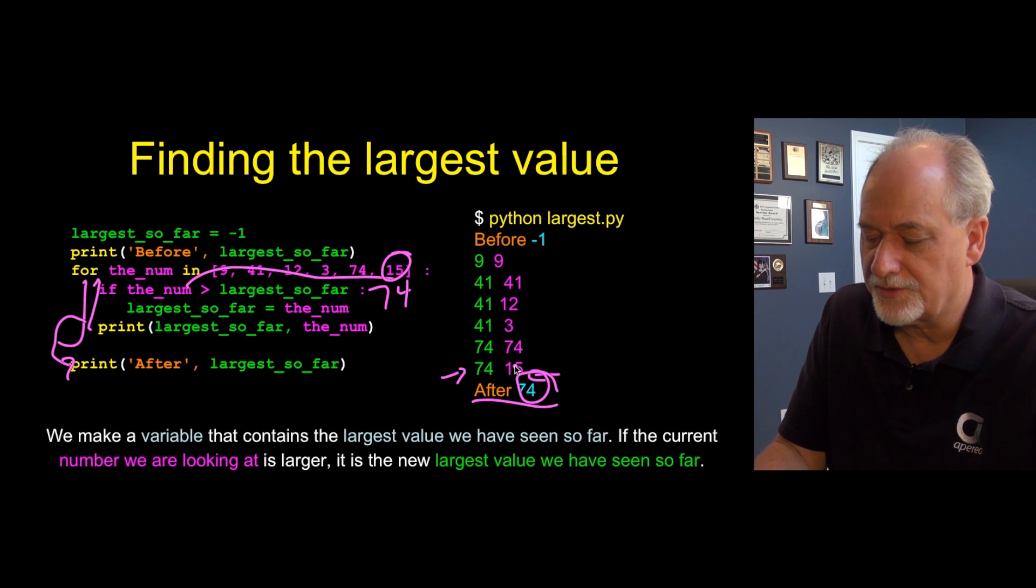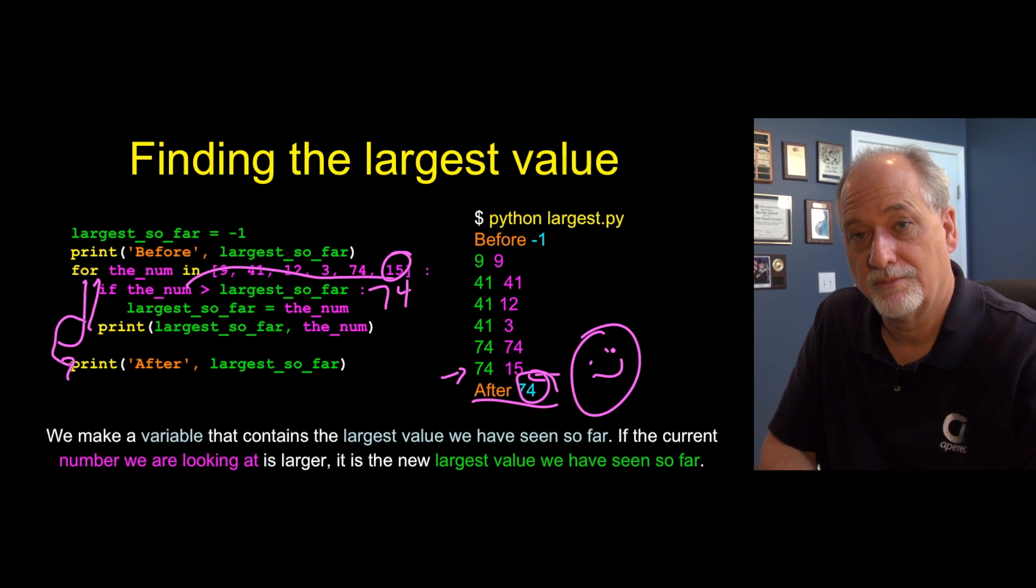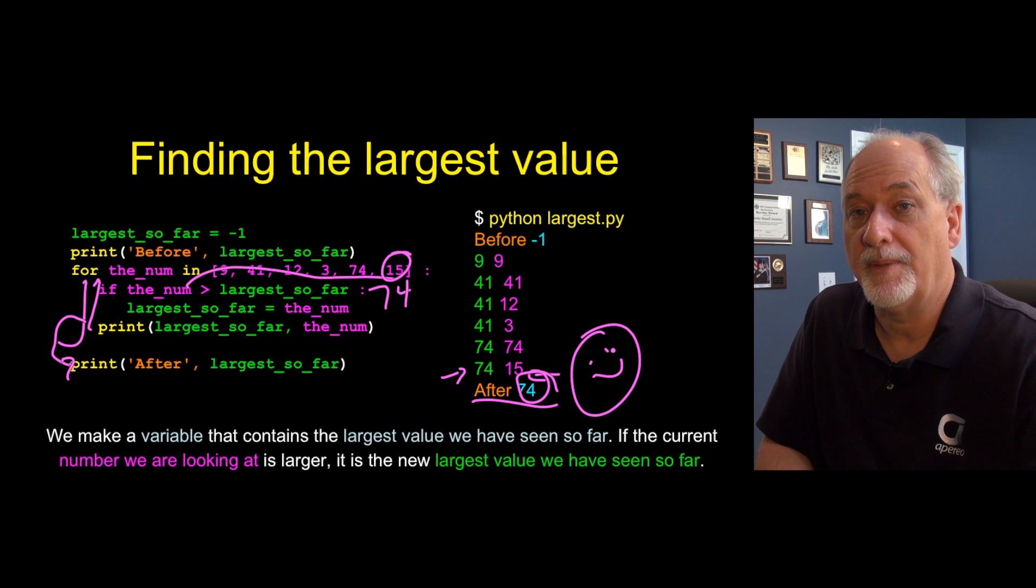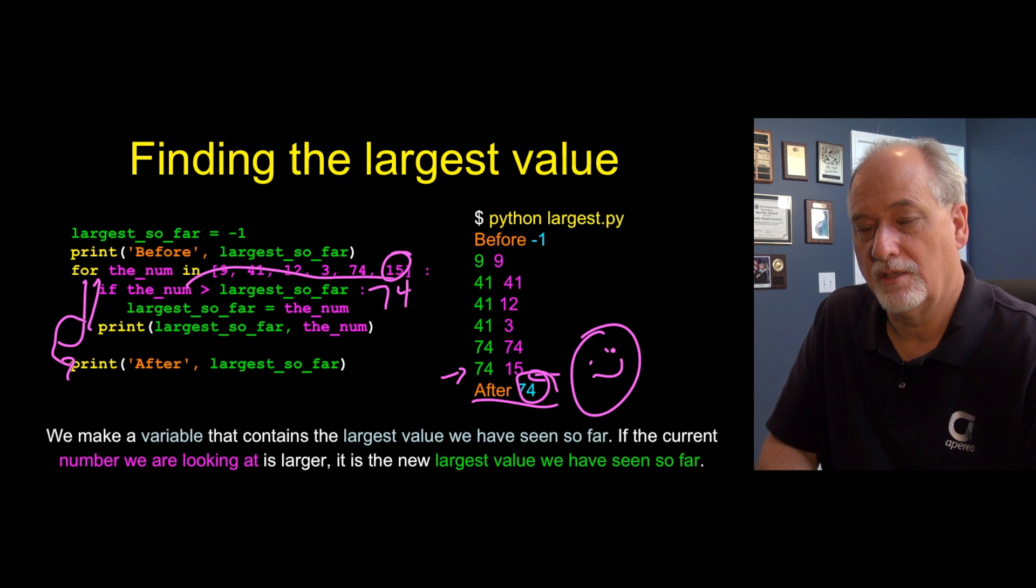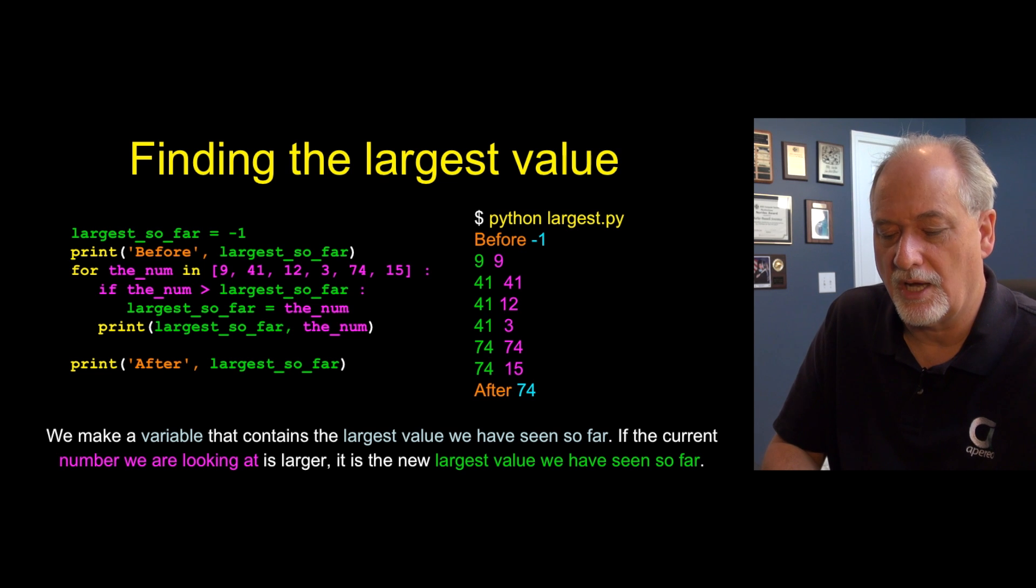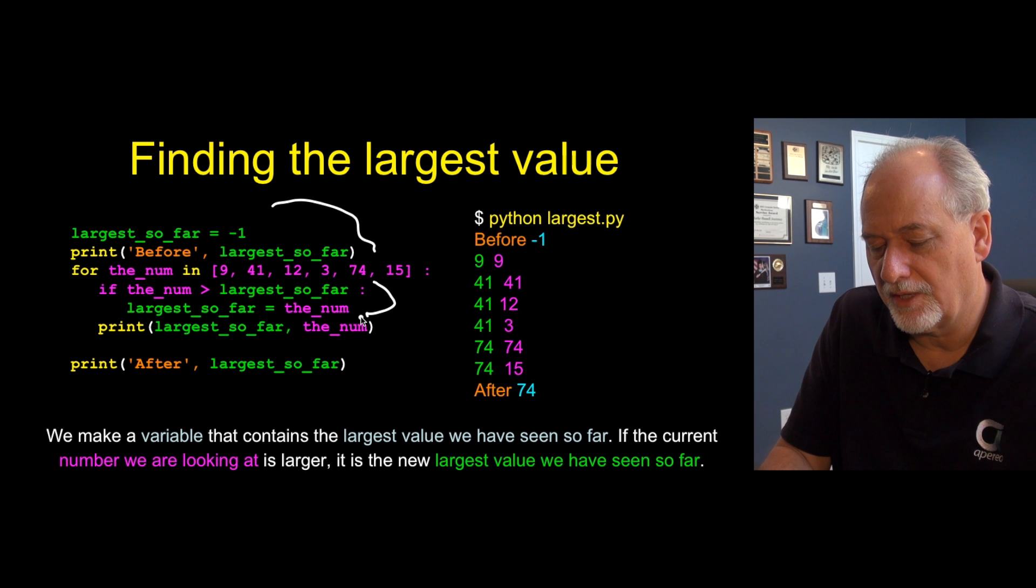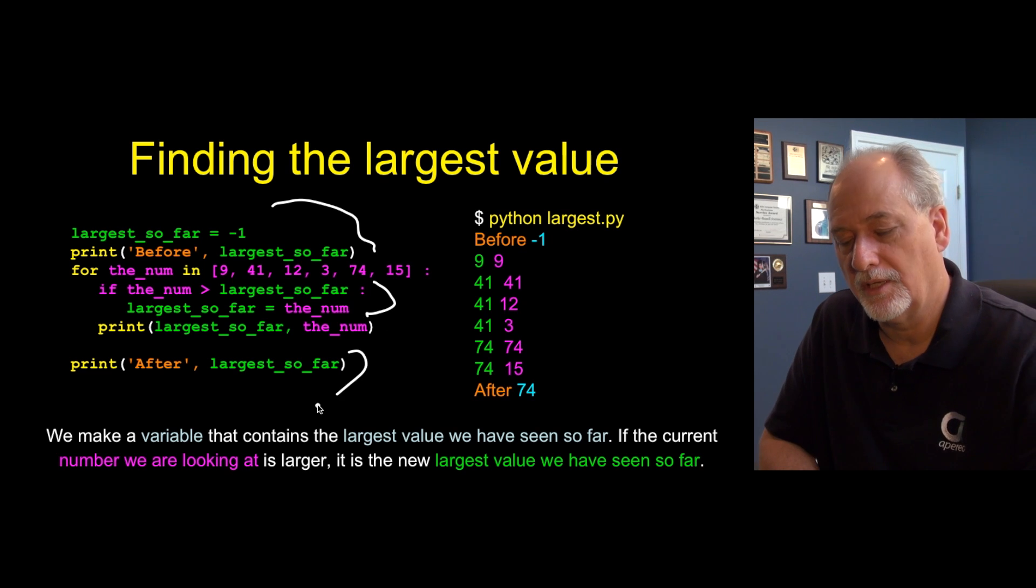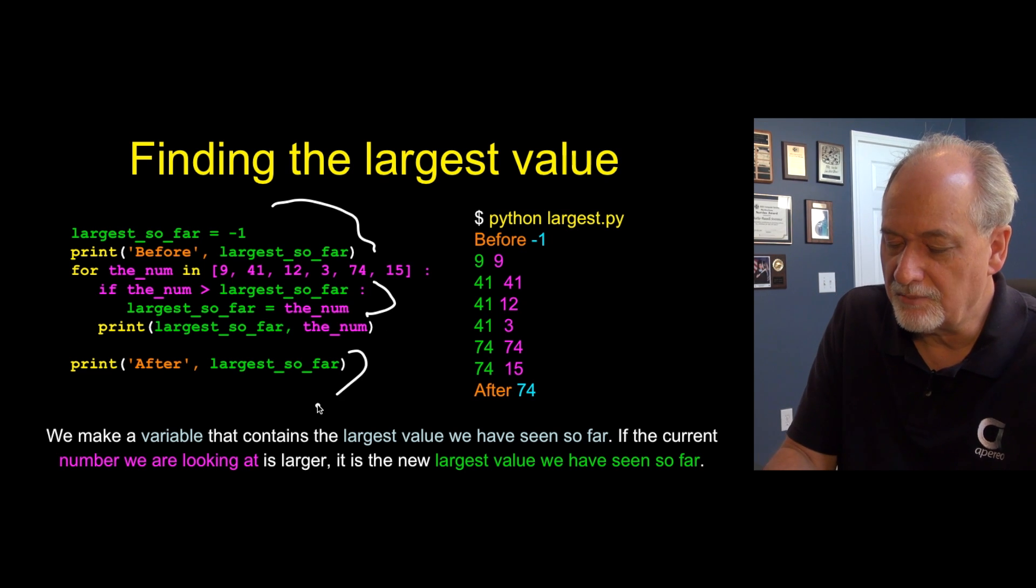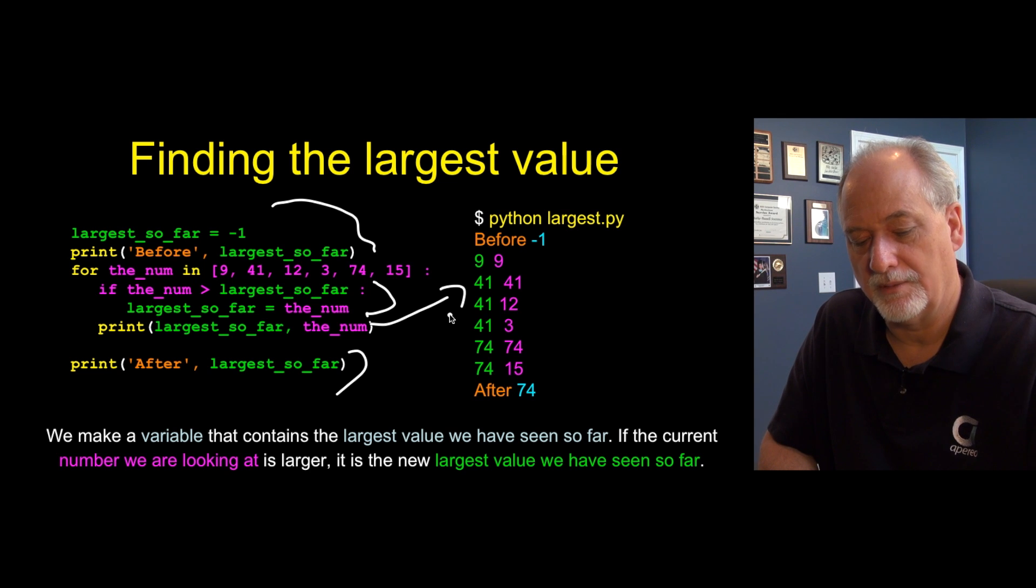But at this point it's also the largest, right? So largest so far became largest when our loop finished. That sort of gives you this notion of how we construct something at the beginning, some kind of thing that we're going to do over and over and over again, and then something at the end. And we put some print statements in just so we can watch it and see what's going on.